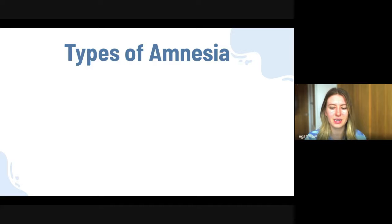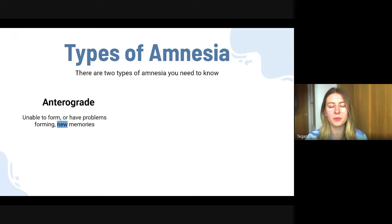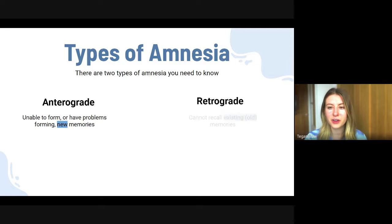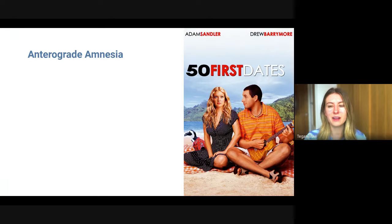There are two types of amnesia. Firstly, anterograde amnesia — this is being unable to, or having problems forming new memories. Then there is retrograde amnesia — this is when you cannot recall existing memories. If you've ever seen the film '50 First Dates,' the female main character experiences anterograde amnesia.